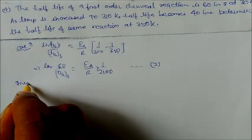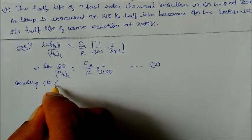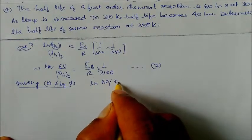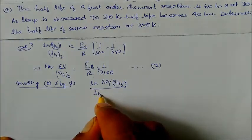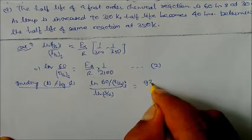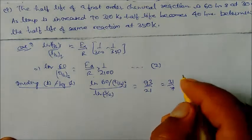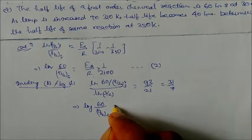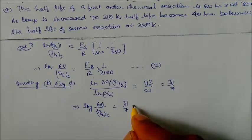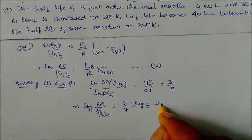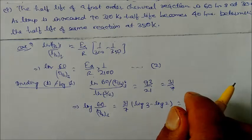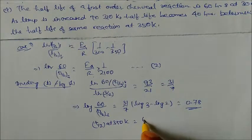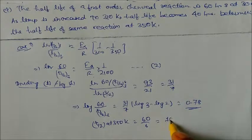Working through the logarithm arithmetic — log 2 minus log 3 combinations — we find t½ at 350 K equals 60/6 = 10 hours. So the answer is 10 hours.